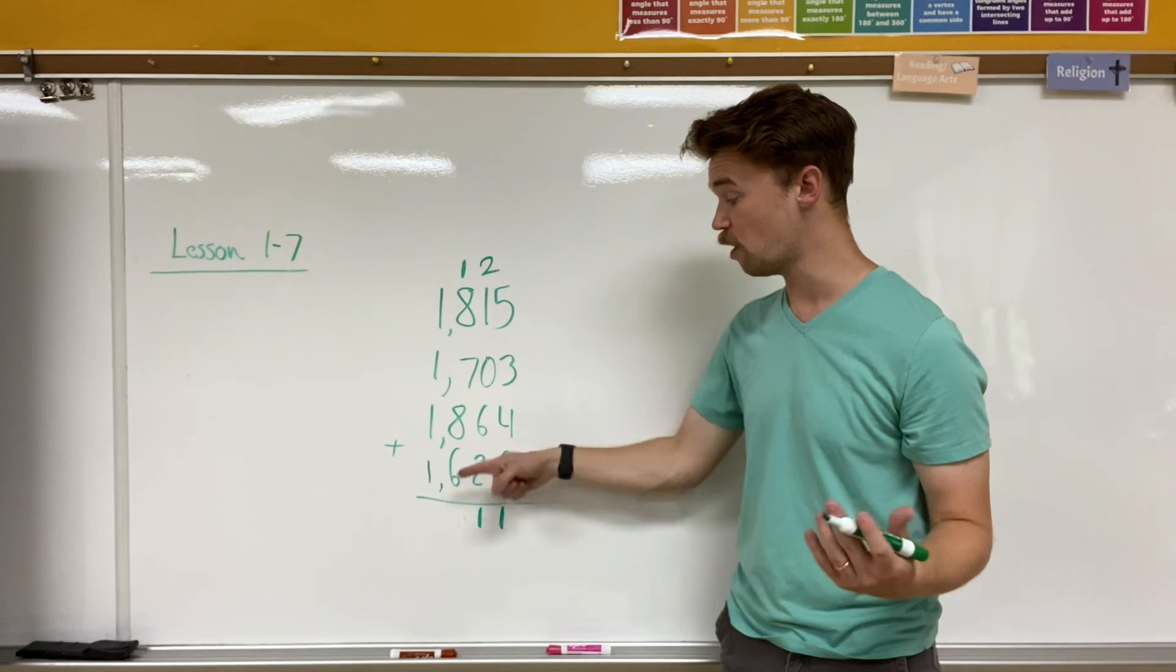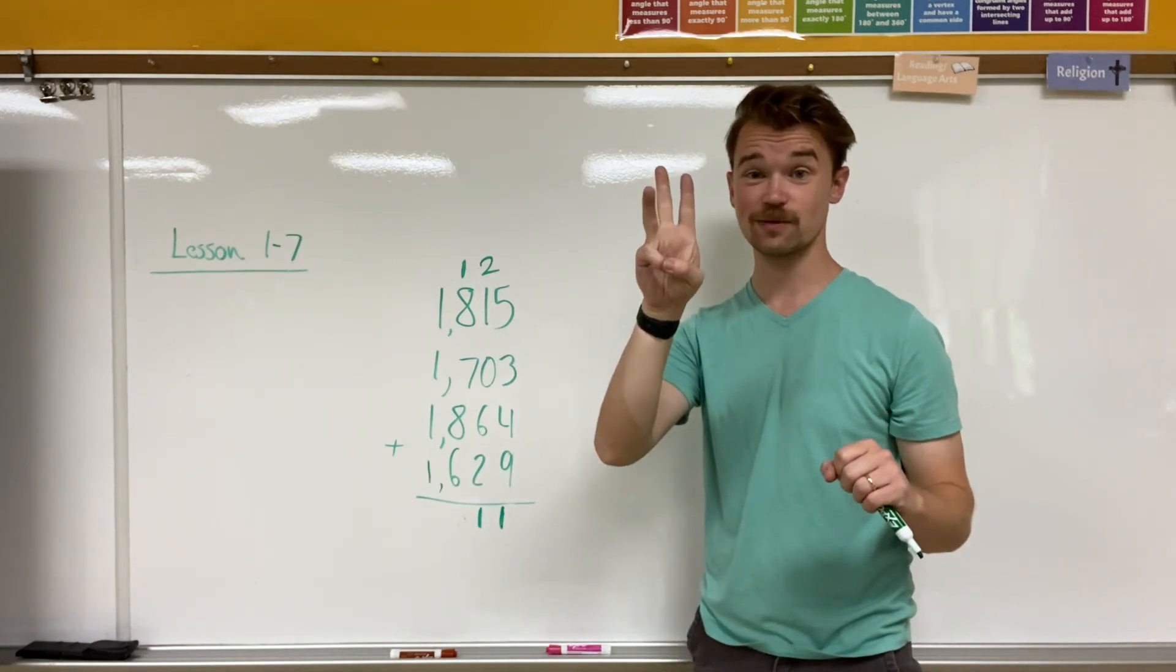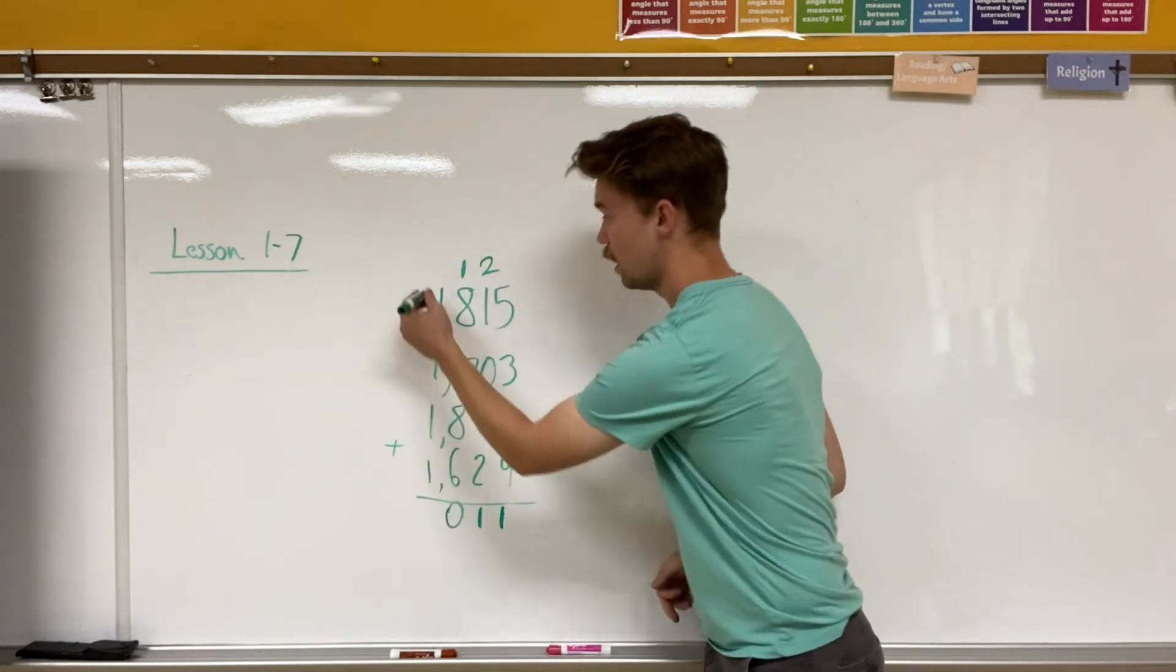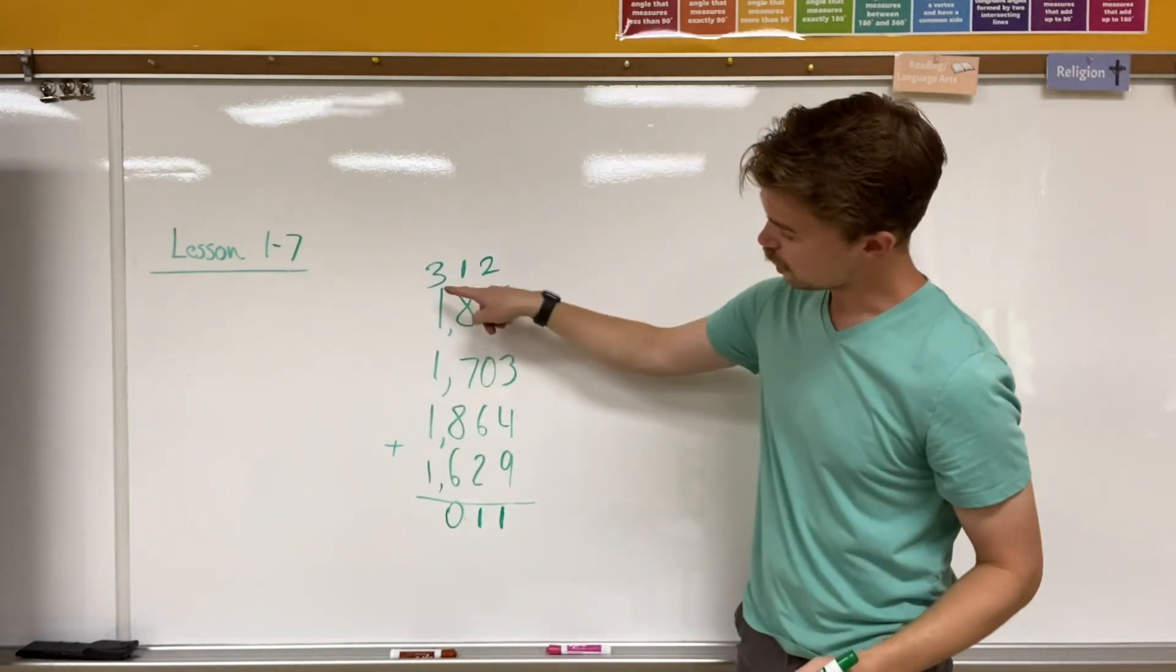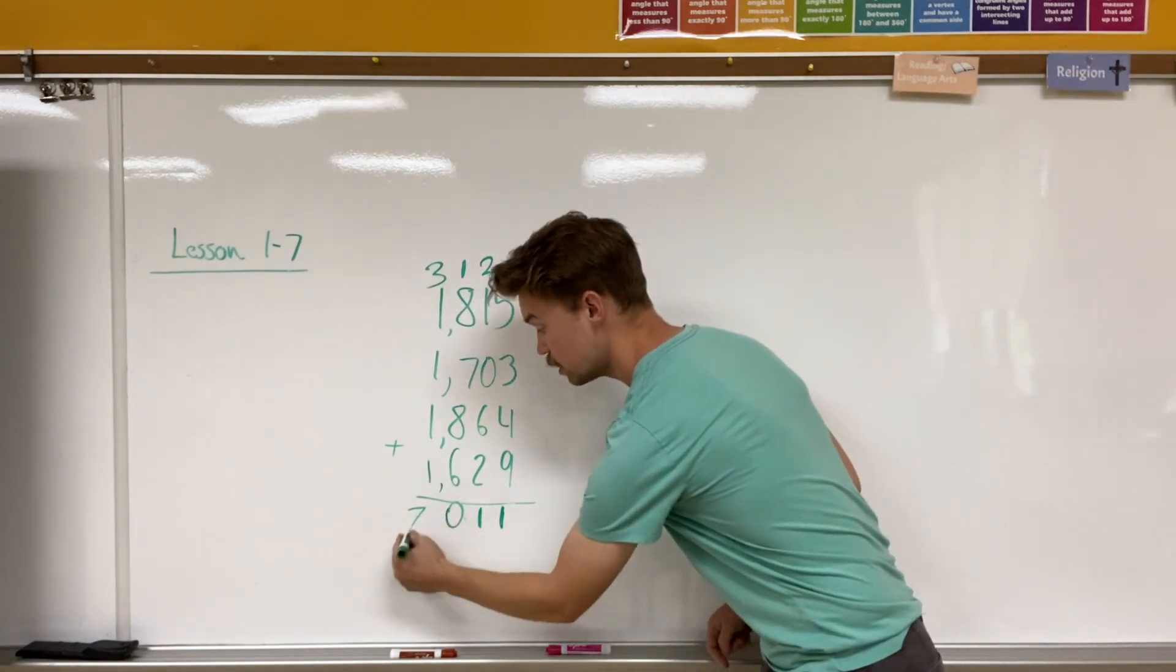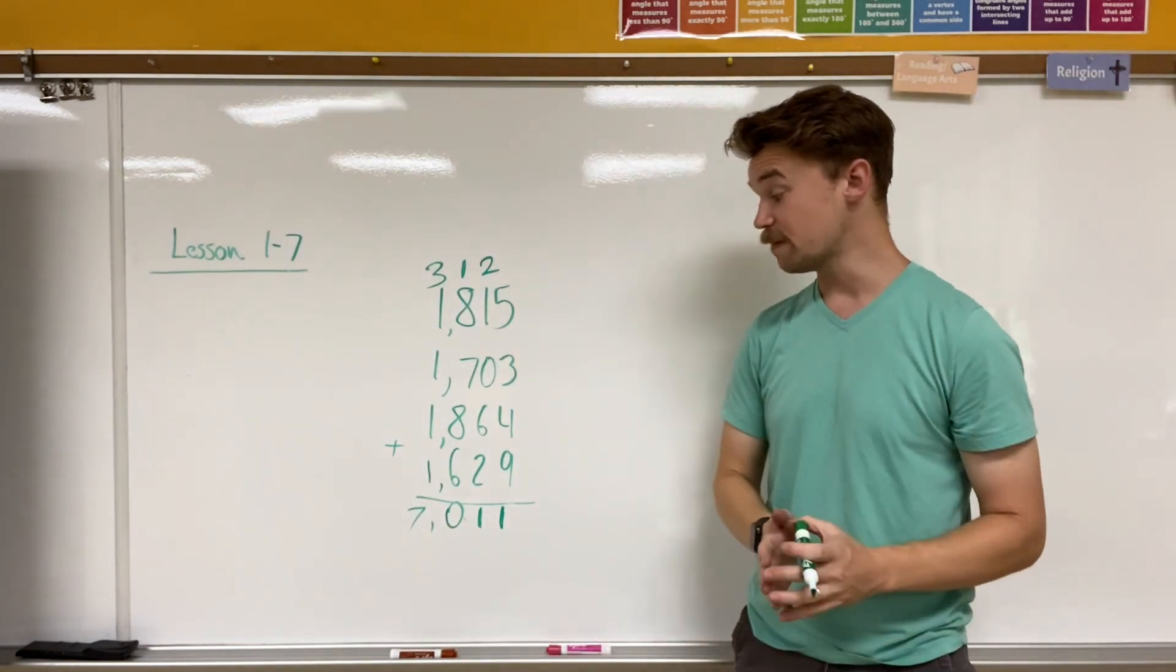Well, eight times three is 24 plus six, 25, 26, 27, 28, 29, 30. So I have a zero here and a three brought all the way up here. I have one, two, three, four ones and three, which would be seven. So my answer should be 7,011.